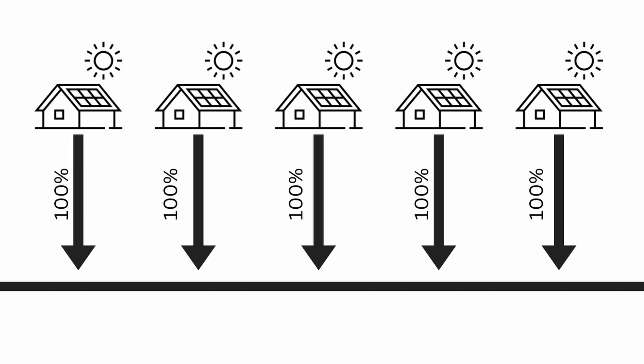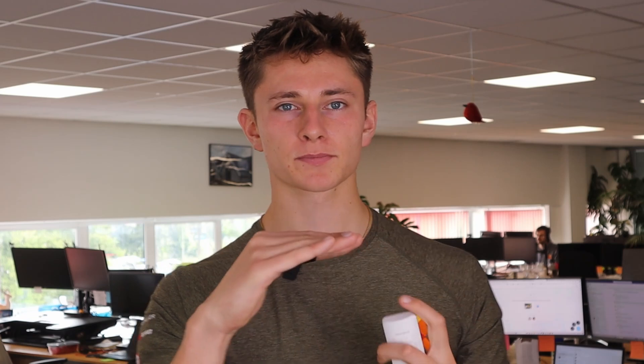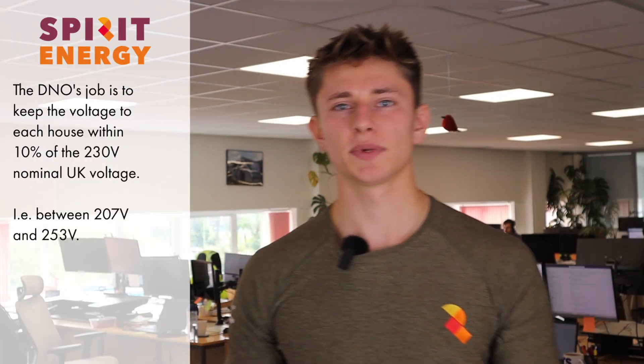The DNO will look at the most impactful scenario, which is when all systems in the local area are exporting at full capacity to the grid. This is why on sunny days you do sometimes get problems with inverters shutting down due to high voltage. However, this issue is quite rare nowadays, as most inverters can operate up to 262 volts, whereas the grid can only go up to 253 volts.